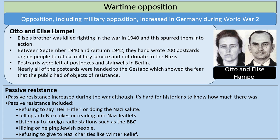Another example of opposition was Otto and Elise Hampel. Elise's brother was killed fighting in the war in 1940 and this spurred them into action. Between September 1940 and autumn 1942, they hand-wrote 200 postcards urging people to refuse military service and not donate to the Nazis. Postcards were left at postboxes and stairwells in Berlin. Nearly all of the postcards were handed to the Gestapo, which shows the fear the public had of objects of resistance. There was also an increase in passive resistance during World War II, including people refusing to do the Nazi salute, telling anti-Nazi jokes, listening to foreign radio stations like the BBC, hiding or helping Jewish people, and refusing to give to Nazi charities like Winter Relief.